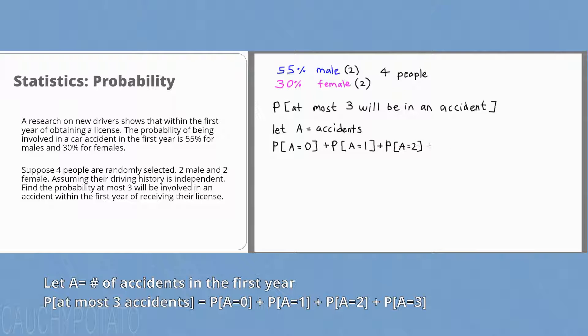Plus probability A equals two, two accidents. Probability A equals three, three people get into an accident. And probability A equals four, which is all four get into an accident. If we add each of these, we get the probability one.